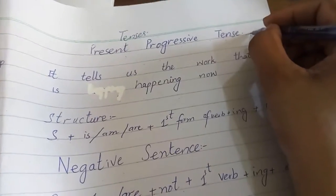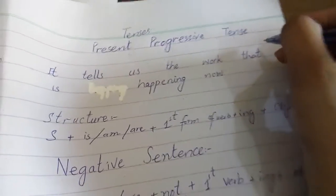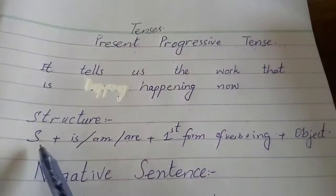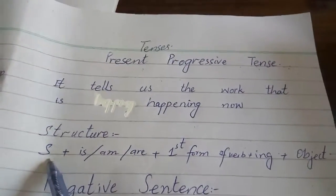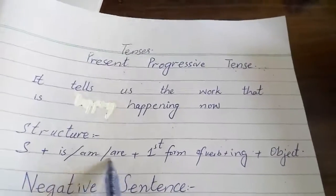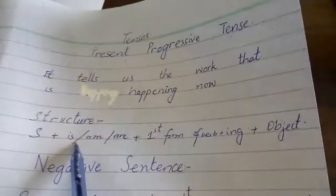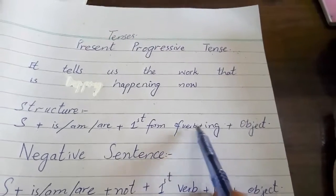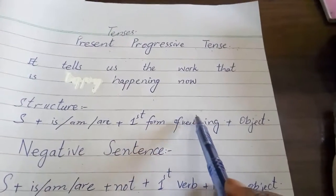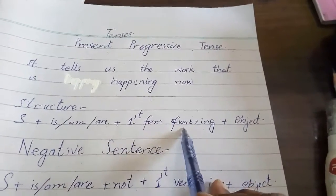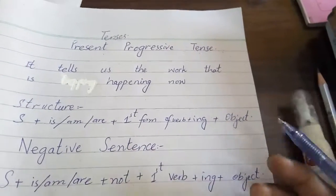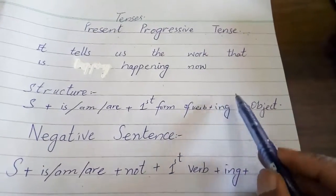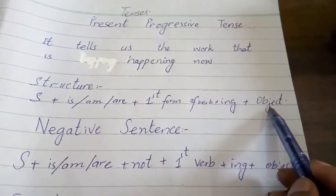So how will we make a sentence in this tense? Firstly, check the structure for simple sentences. First of all, we will write the person name or subject, then we use the helping verb which is 'is', and then we use the first form of the verb plus '-ing' — the '-ing' form of the verb. Like making, breaking, speaking, talking, writing — all verbs in '-ing' form.